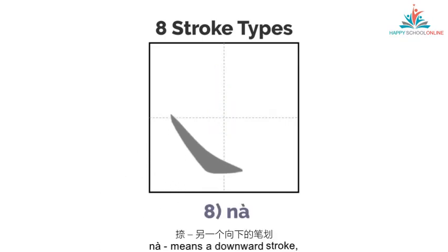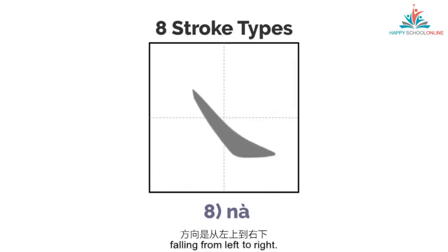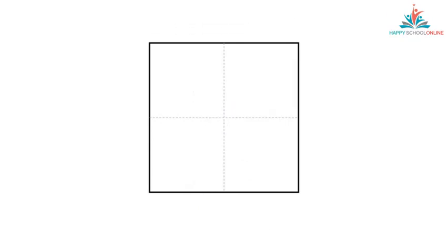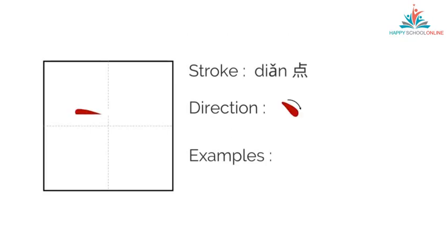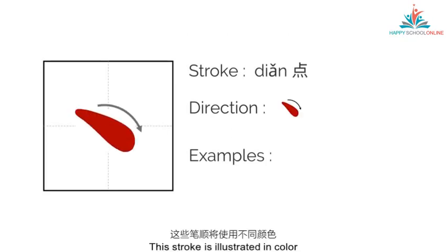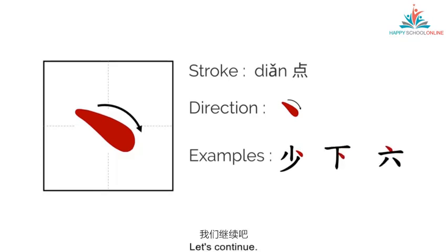Finally, 纳 means a downward stroke, falling from left to right. Here are some examples of the 8 stroke types. This stroke is illustrated in color on the Chinese characters in our examples. Let's continue.